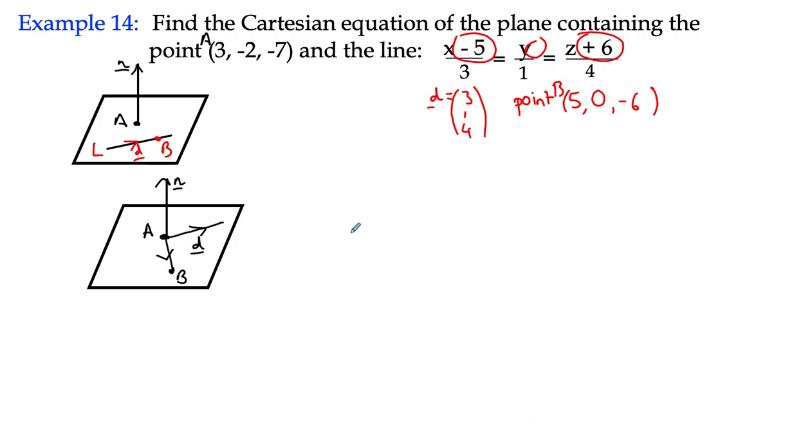So I'm going to say that the point A, B is B minus A, and that is 5, 0, negative 6, minus point A, which is 3, negative 2, and negative 7, which gives me the vector 2, 2, and 1. Negative 6, I'll try negative 7, it's positive 1.